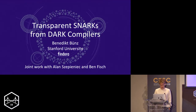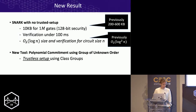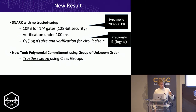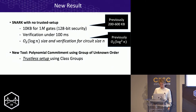I will talk about transparent SNARKs from DARK compilers. The main result is a new SNARK without any trusted setup, which is very short — only 10 kilobytes — whereas previously these SNARKs without trusted setup were 200 to 600 kilobytes. It's also very efficient to verify, and what it uses is a polynomial commitment using groups of unknown order, which you can use without a trusted setup.